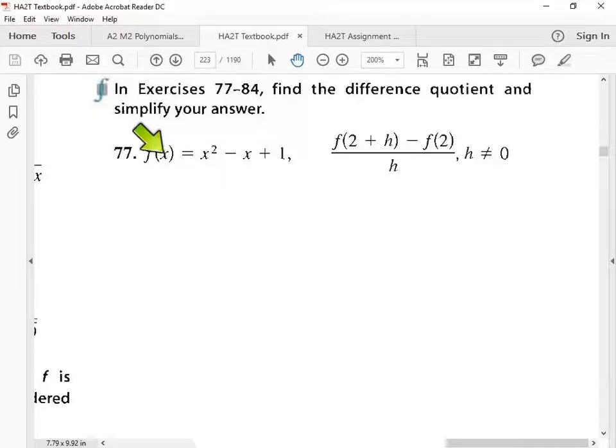You plug stuff into this function. You see that X right there? I want you to say stuff whenever you see that. So we're going to take stuff and we're going to square stuff and then we're going to subtract that stuff and then add one. So it's the same function. It says f. What's the stuff? Two plus h.